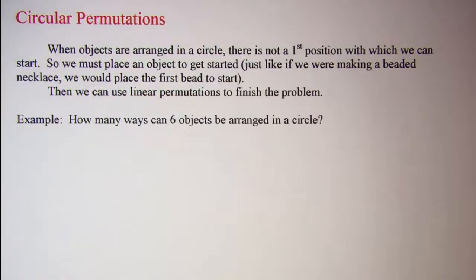In this video we'll be looking at circular permutations. When objects are arranged in a circle there's not a first position with which we can start. So we must place an object to get started. Just like if we were making a beaded necklace we would place the first bead to start and then we can use linear permutations to finish the problem.